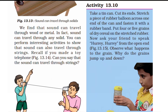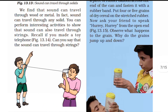Take a tin can and cut it at one end. Stretch a piece of rubber balloon across one end of the can and fasten it with a rubber band. Put 4 or 5 grains or dry seeds on the stretched rubber. Now ask your friend to speak from the open end of the can — the grains will jump when sound enters.